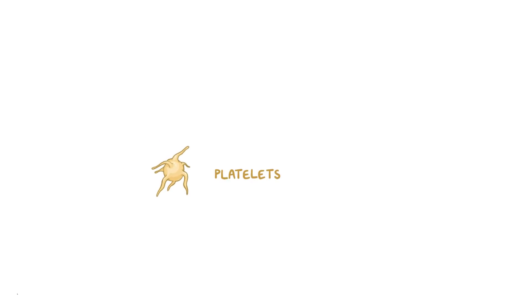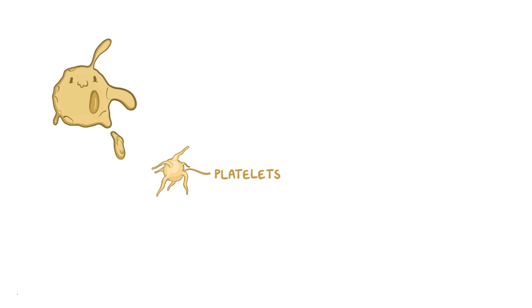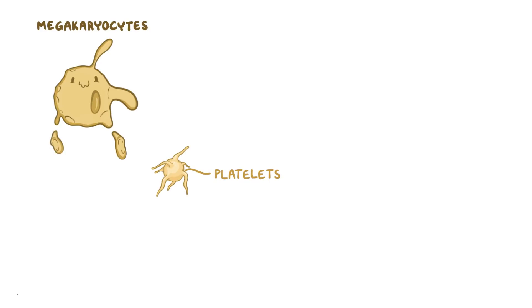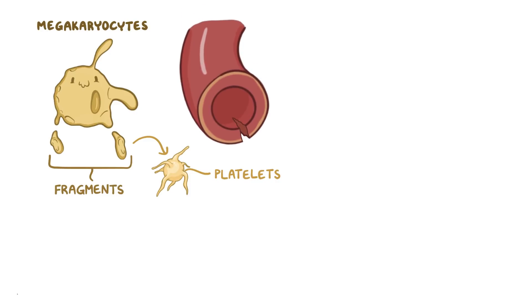Platelets specifically rely on this functionality because they originate from large precursor cells called megakaryocytes. These megakaryocytes have very long arms, like a squid, and the cytoskeleton changes shape so that these arms can detach to form cellular fragments called platelets. The platelets then go off to form clots at damaged sites in the blood vessels to stop bleeding.